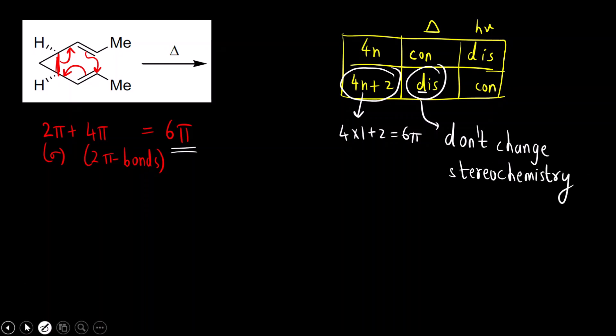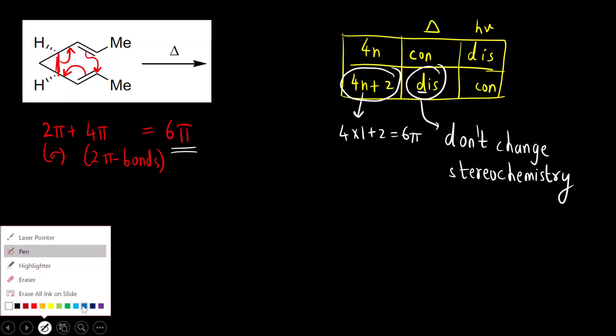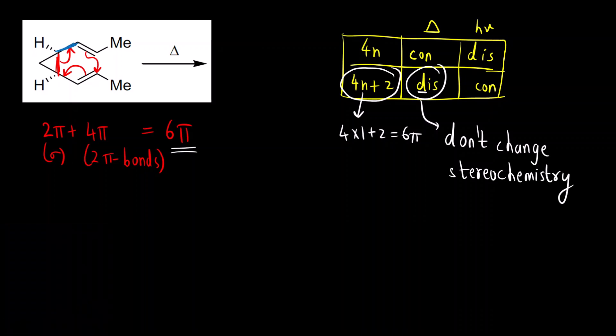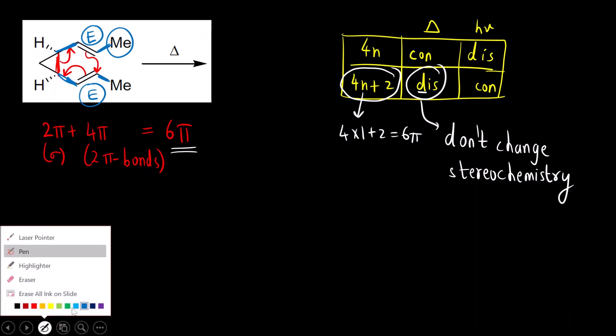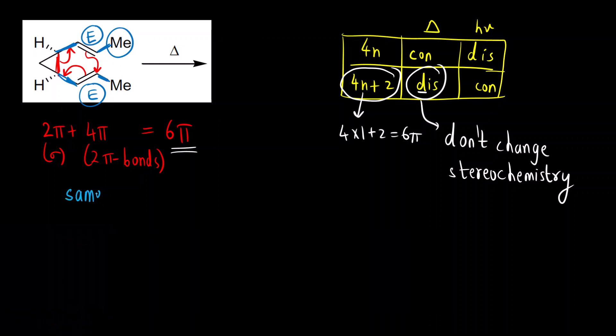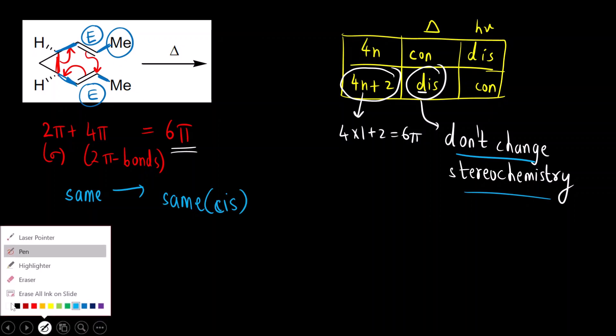Now we will assign EZ configuration for the pi bonds. Here you can see this R group has higher priority and this methyl group, both are on the opposite side, so this is E. Similarly, here also this methyl group and this R group both are on the opposite side, so it is E. E and E, that means they have same stereochemistry. Same stereochemistry and don't change means it will remain same. Same means we have to draw a compound having cis geometry. Now we can draw the product.